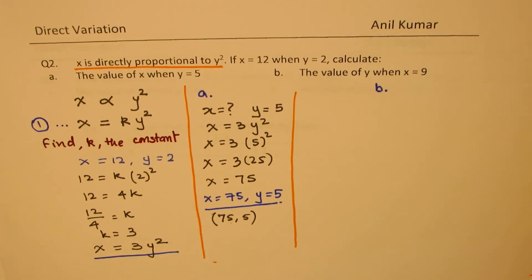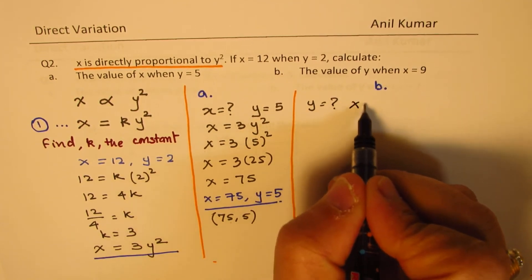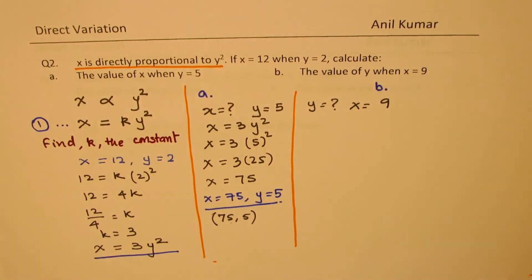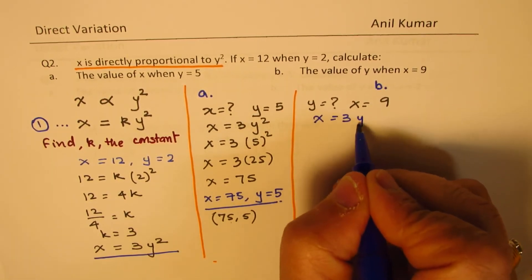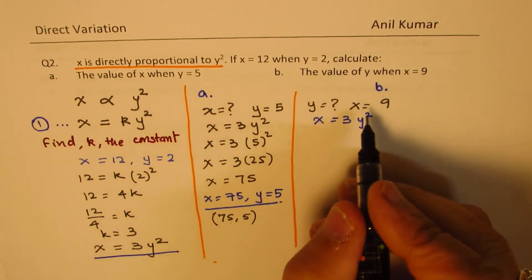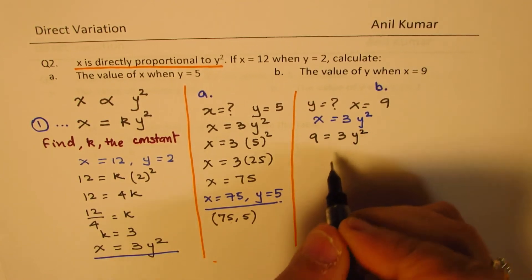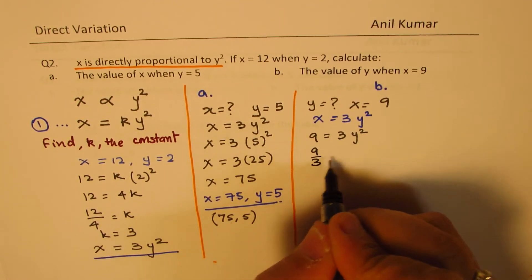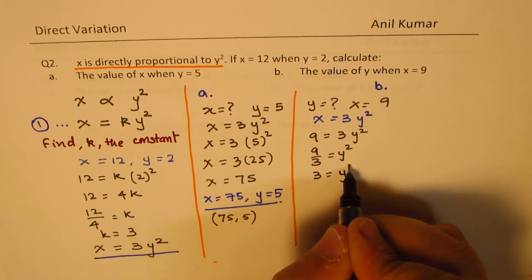It's slightly tricky. It says we need to find the value of y when x is equal to 9. Let us use the same equation which is x equals to 3 y square. Substituting the value we get 9 equals to 3 y square. We can divide 9 by 3 and we get 3 equals to y square.